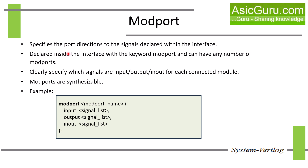Modport is used to specify the direction of signals declared inside an interface. This is important because the same interface might be connected to different modules, each using the signals differently. Modport is defined using the keyword 'modport', and you can have multiple modports in a single interface. Modport clearly specifies which signals are input, output or inout for each connected module, and they are synthesizable too. As shown in the syntax box, we declare a modport with the 'modport' keyword, then a modport name, and then list signals with their direction — input, output or inout. This way, modports help avoid confusion and make interface usage more structured and reusable.